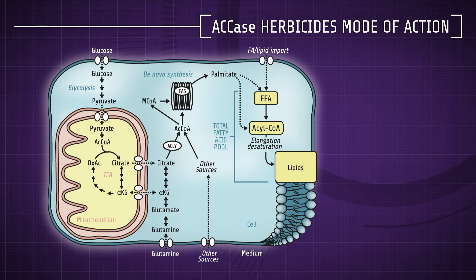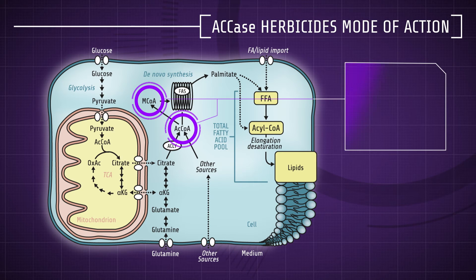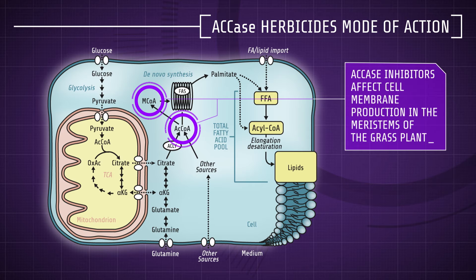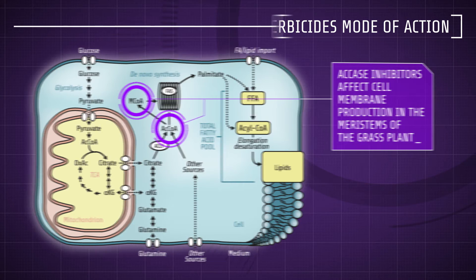Acetylcoenzyme A carboxylase, or ACCase, is part of the first step of lipid synthesis. Thus, ACCase inhibitors affect cell membrane production in the meristems of grass plants.